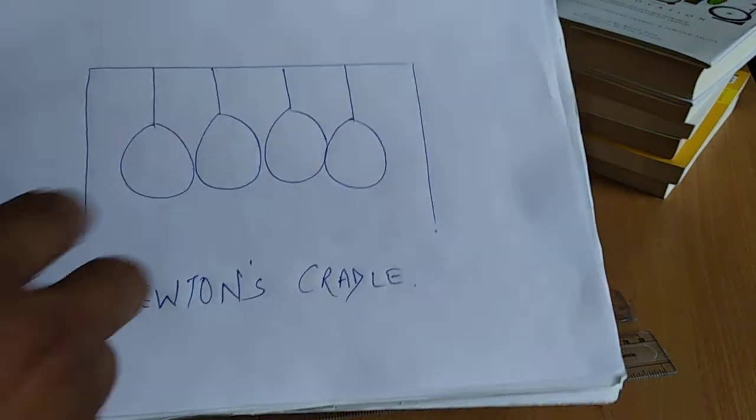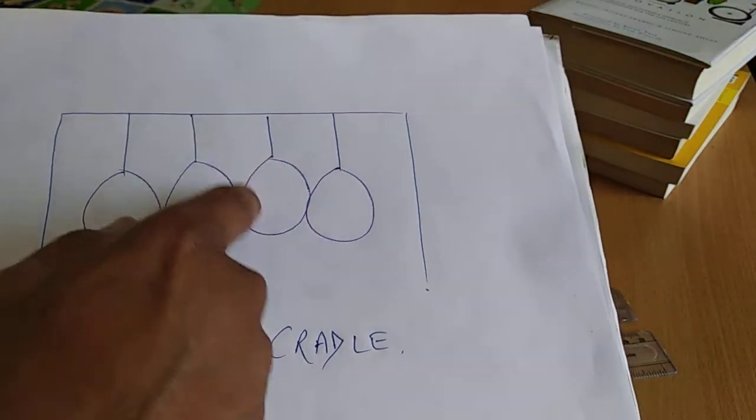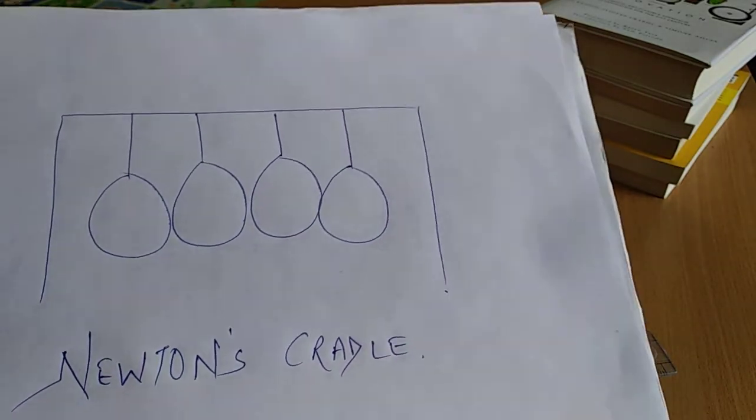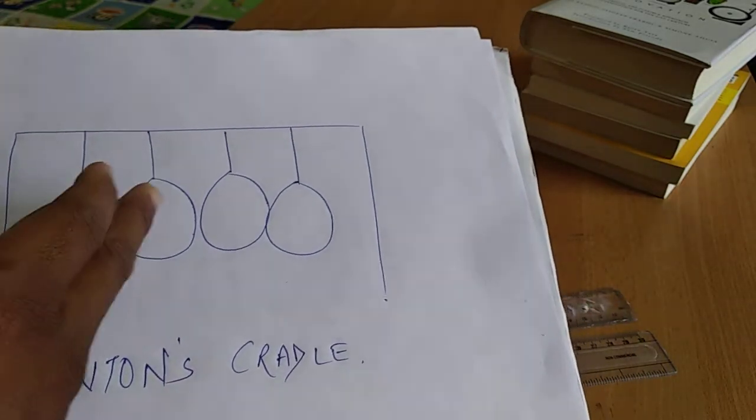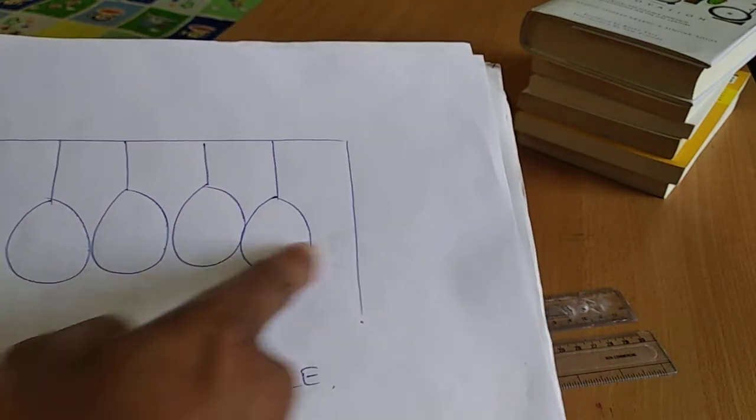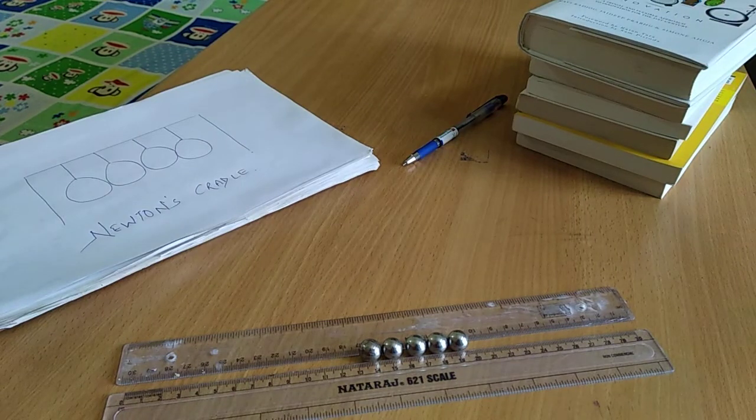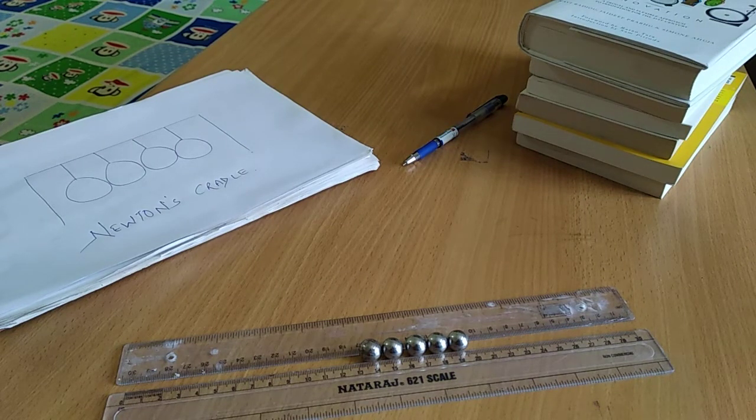Now, what is Newton's Cradle? It is a very famous experiment in which four or five balls are tied with strings. When you move one and release it, it will strike the other ones and from this side, one will go away. This experiment shows the conservation of momentum as well as the conservation of energy.